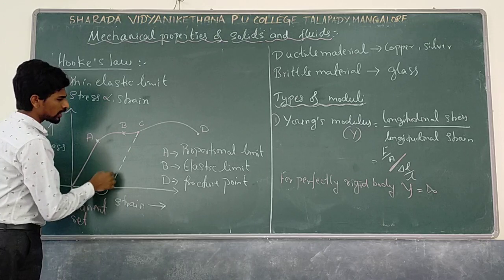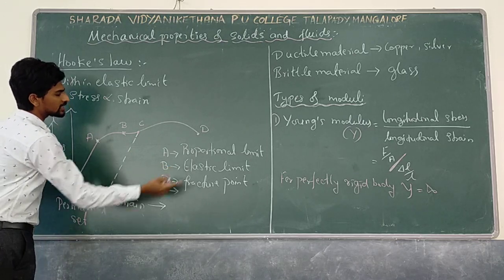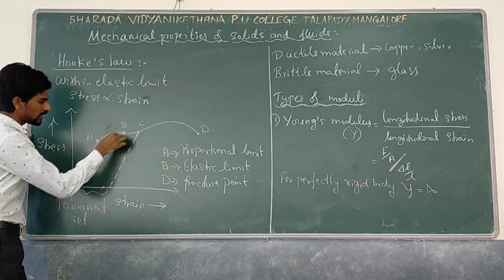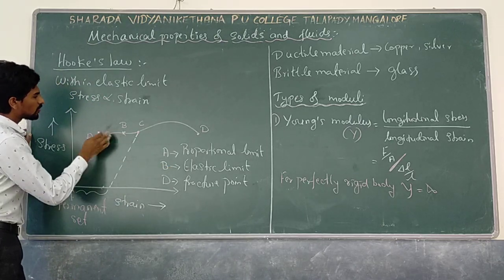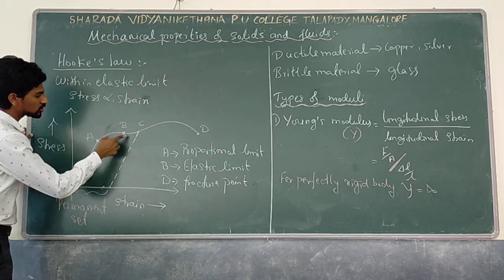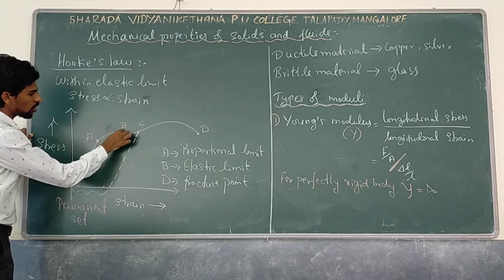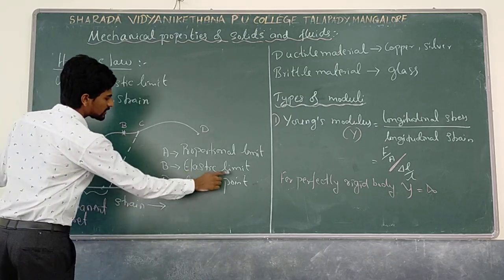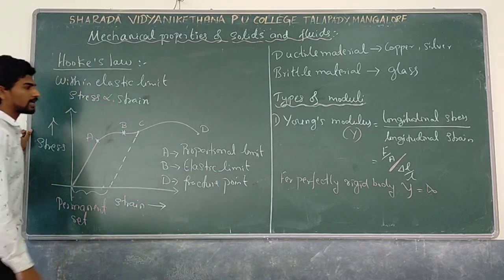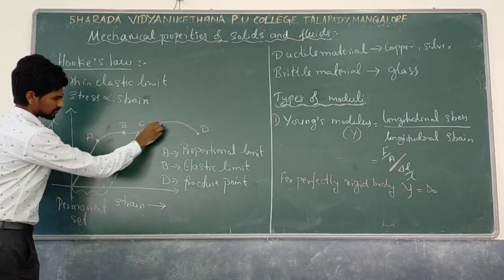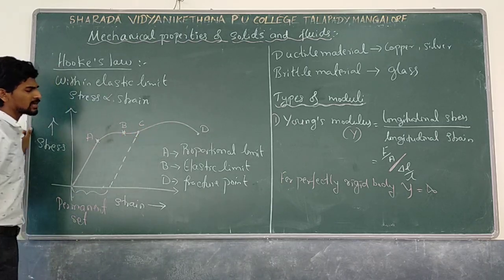Point B is called the elastic limit. Before point B, the body will regain its original shape and size — it will show elastic properties up to point B. After this point, it will no longer show elastic properties.